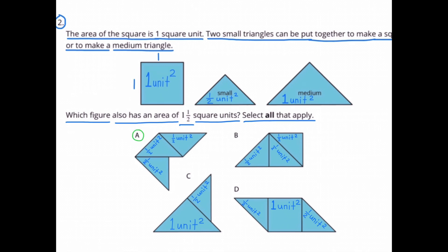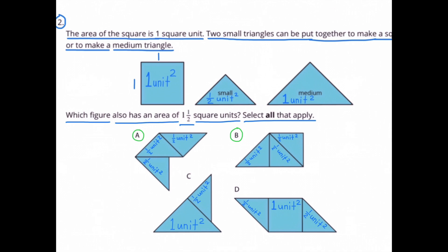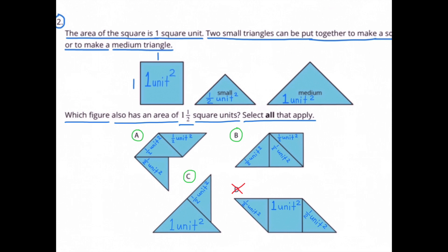A totals one and a half square units. So does B. So does C. But not D. D is the total of two square units.